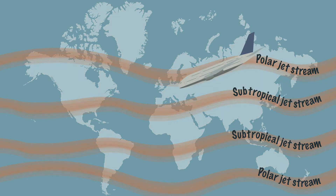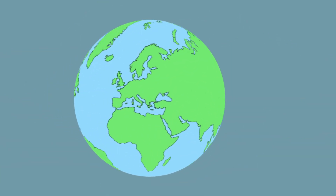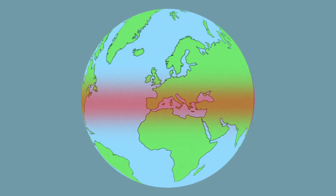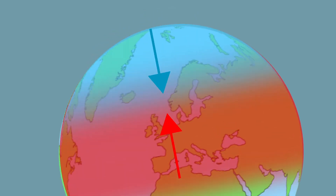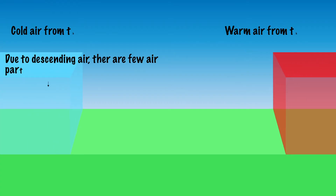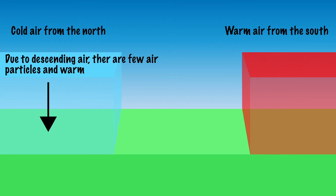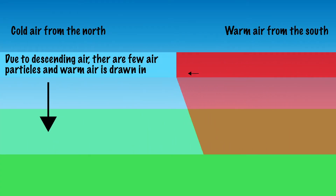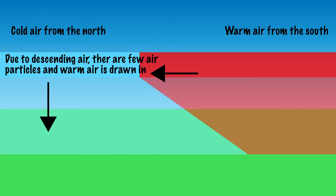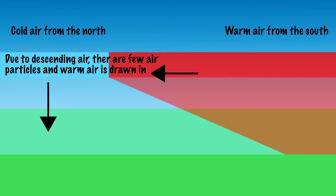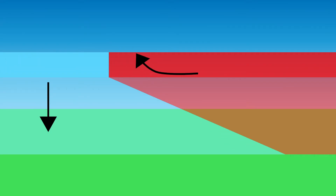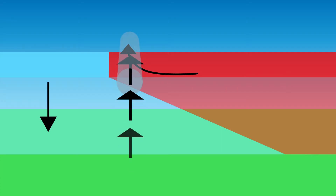The polar jet stream is created when warm air from the south collides with cold air from the north. The cold air sinks down, leaving few air particles higher up in the atmosphere. As a result, the warm air shifts towards the north over the cold air to fill the shortage of air particles. The Coriolis effect causes the warm air to drift to the right, causing the jet stream to move eastward.